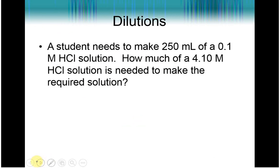There we go. So a student needs to make 250 milliliters of a 0.1 HCl solution. How much of a 4.10 molar solution is needed to make the required solution? So this is almost straight out of the lab you guys have in a few weeks. You get a concentrated HCl solution, actually it's going to be NaOH, but same thing. And then you have to dilute it down so that you can perform titrations with it.